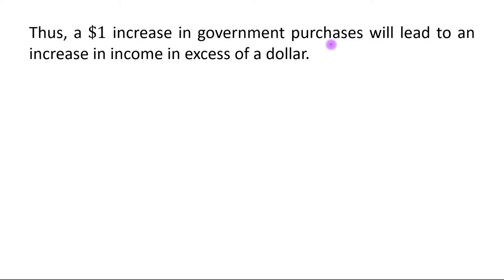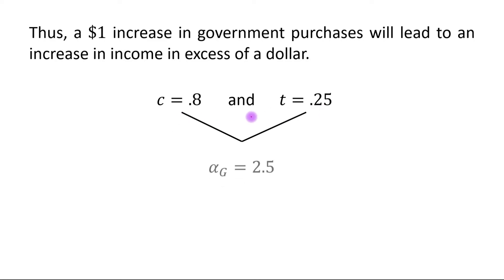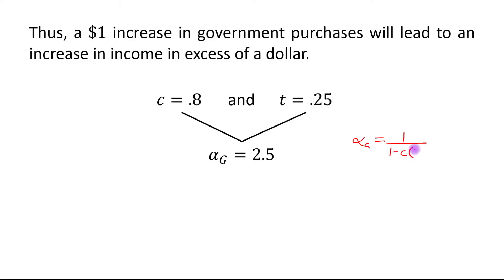A one-dollar increase in government purchases will lead to an increase in income in excess of one dollar. Suppose that MPC out of disposable income is 0.8 and the tax rate is 0.25. This implies that the value of the multiplier will be 2.5. We know that α_G = 1 / (1 − MPC × (1 − t)) = 1 / (1 − 0.8 × 0.75).